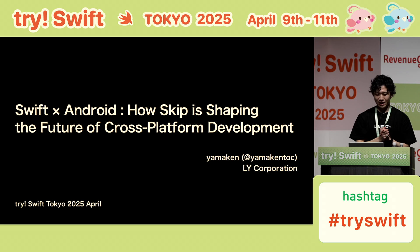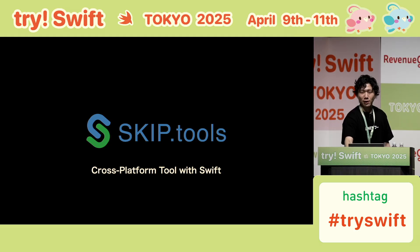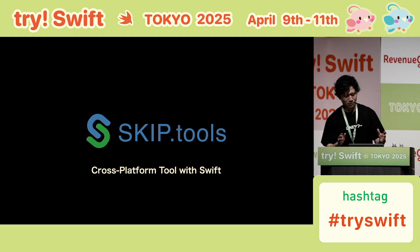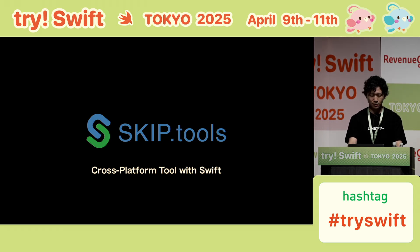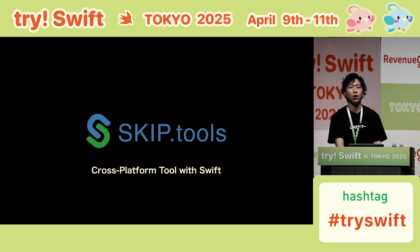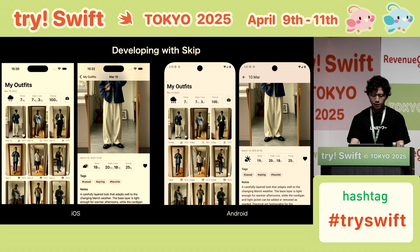Hi, let's get started. Do you know Skip? Skip is a cross-platform tool that lets you build iOS and Android apps using Swift. It was released last August, and it is still new. I'm developing an Outfit Photo Management app using Skip.